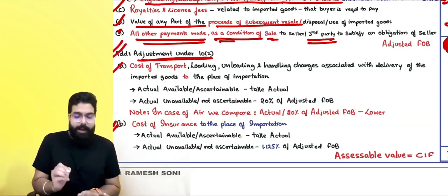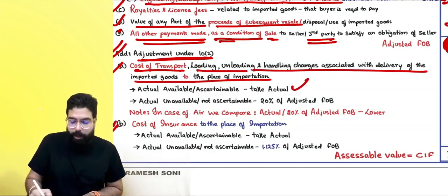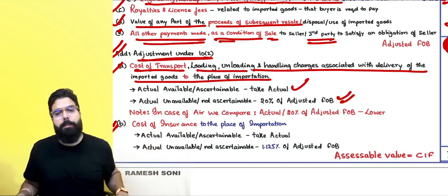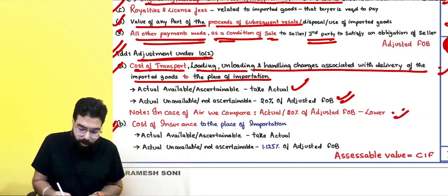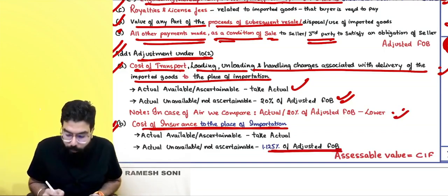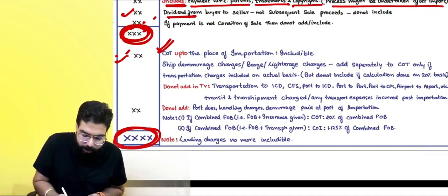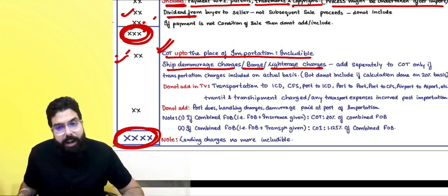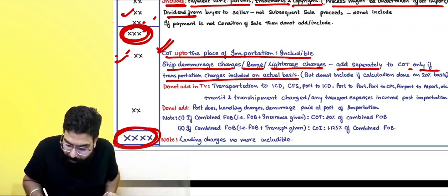Rule 10(2)(a): add cost of transportation, loading, unloading, and handling charges up to the place of importation. If actual is available, take actual. If not, take 20% of the adjusted FOB. In case of air transport, compare actual with 20% and take whichever is lower. Rule 10(2)(b): cost of insurance — take actual if available; if unavailable, take 1.125% of the adjusted FOB. This gives you the CIF value.